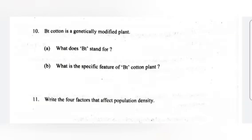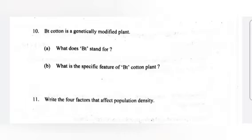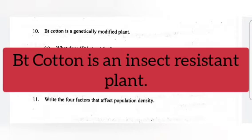Question 10. Bt cotton is a genetically modified plant. A. What does Bt stand for? Answer: Bacillus thuringiensis. B. What is the specific feature of Bt cotton plant? Answer: Bt cotton is an insect-resistant plant.